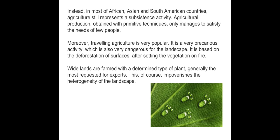In Asia, Africa, and South American countries, agriculture still represents a subsistence activity. Agricultural production obtained with primitive techniques only manages to satisfy the needs of few people. Travelling agriculture is very popular but is a precarious activity which is also very dangerous for the landscape. It is based on deforestation of surface areas, then setting the vegetation on fire, with the land then farmed with a determined type of plant — generally the most requested for exports. This of course impoverishes the heterogeneity of the landscape.